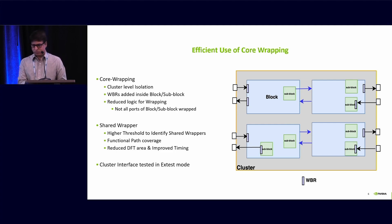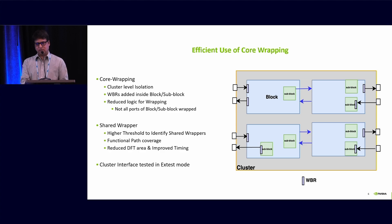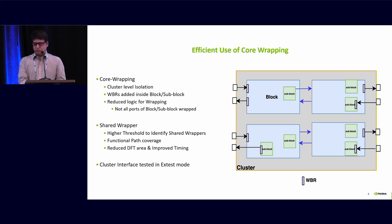Now let's discuss efficient use of core wrapping. We insert the wrapper for the cluster-level port. During the DFT analysis we map all the cluster-level ports to the sublock and block, and only those ports get the WBR. The WBR are inserted inside the block or sublock, which reduces the logic for the wrapping. Only the ports of the block or sublock which actually go all the way to the cluster level get the wrapper cell — not all ports. This minimizes the core wrapping area. We also use high thresholds to identify the shared wrapper, which reduces DFT area and improves timing.